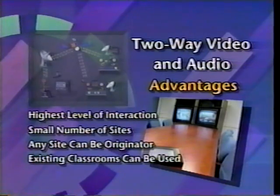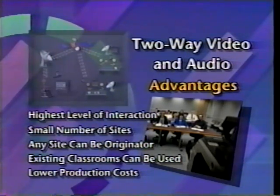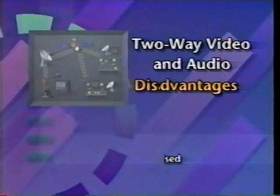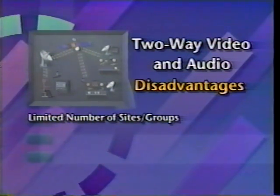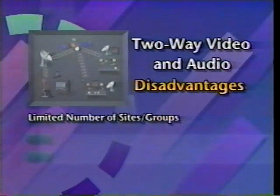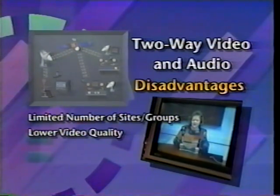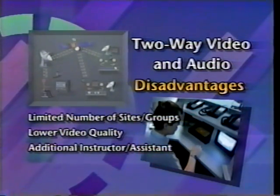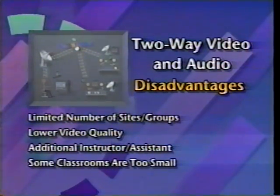Existing classrooms can usually be used since the only requirement is a communications link, resulting in lower production costs and no need for additional production staff. You may decide not to use two-way video with audio if you need to deliver training to many sites or a large number of students — it's difficult for one instructor to handle feedback to more than four or five places or more than 20 people. You'll also need to evaluate whether a lower quality video image will affect your training, and some classrooms may be too small to accommodate your student group.